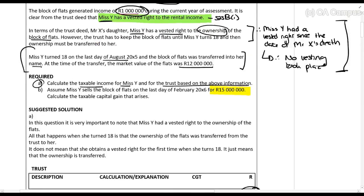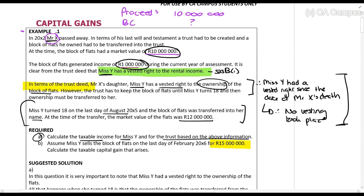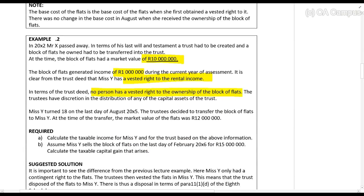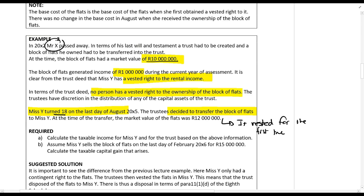Compare these two examples carefully. In the previous example, Ms. Y had a vested right to the ownership. Here she does not. So that is the big difference. She turned 18 and the trustees decided to transfer the block of flats. So what you should see is that when she turned 18 here, it vested for the first time. In the previous example, it vested on the date Mr. X passed away. Here, she only gets it when she turns 18.